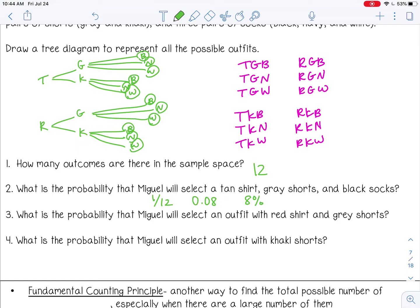What is the probability that Miguel will select an outfit with a red shirt and gray shorts? So how many have red with gray shorts? That would be all of these. So 3 out of 12, which would be 1 fourth or 0.25 or 25%.